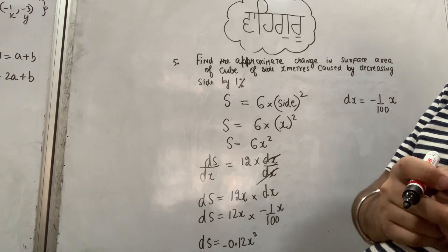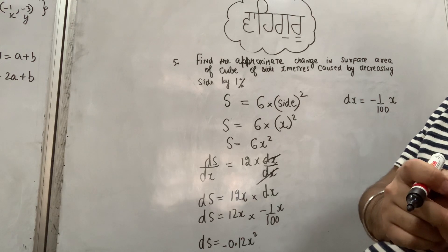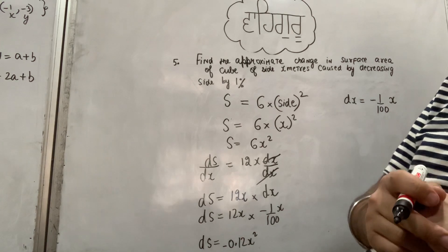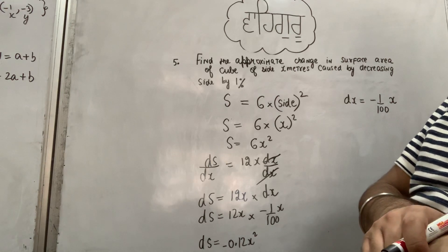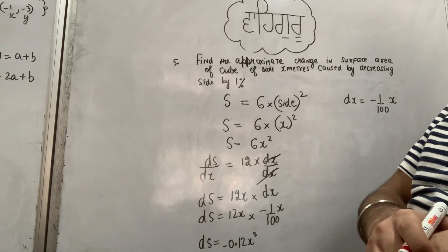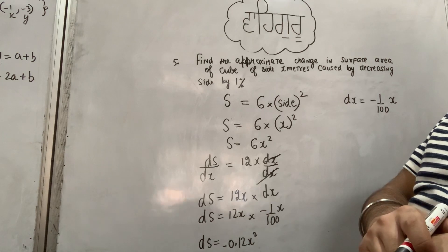Dear students, in this video, I am going to cover question number 5 of application of derivatives, exercise 6.4. Find the approximate change in surface area of a cube of side x meters caused by decreasing the side by 1%.